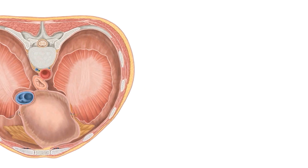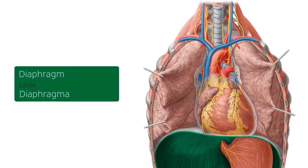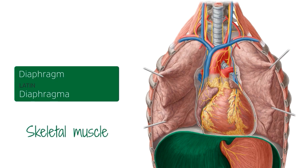The very first thing we're going to be doing is describing what is the diaphragm, which you see here on this image highlighted in green. This is an image of the anterior view of the thorax. You can see a few thoracic organs, namely the heart, the lungs, and here the diaphragm. The diaphragm is essentially a musculotendinous sheet made up of skeletal muscle and a central tendinous part.